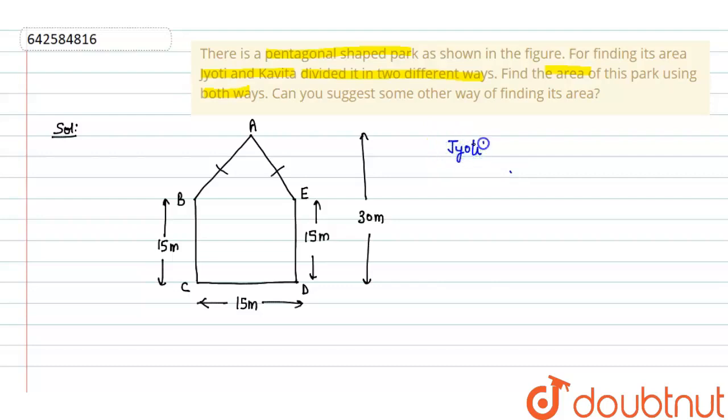Now we will name them A, B, C, D, E. Number one, according to Jyoti: Jyoti is saying that he will find the area by dividing it into two parts. Jyoti is finding the area by cutting it into equal two parts, so there are two trapeziums.